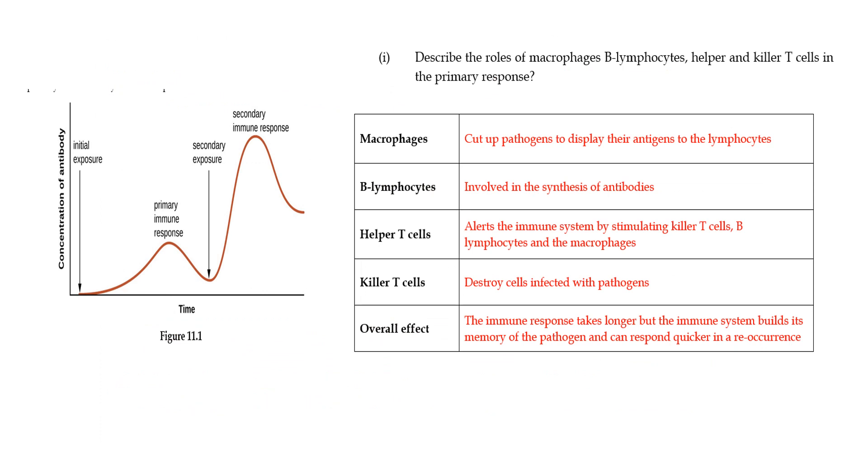I gave you this graph and asked you to describe the roles of the different types of immune cells in the primary response. If you want a more detailed response around what the primary response is and what the secondary response is, check out the videos on chapter 11. Macrophages cut up the pathogens to display the antigens to the lymphocytes, and they engulf some of the foreign particles.